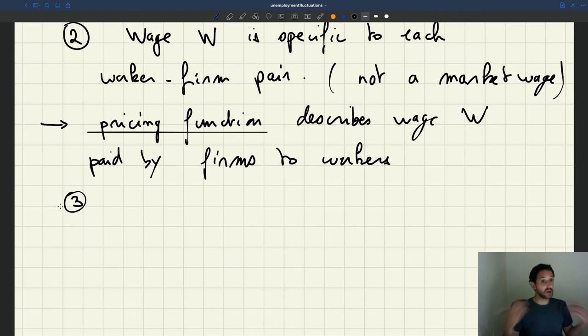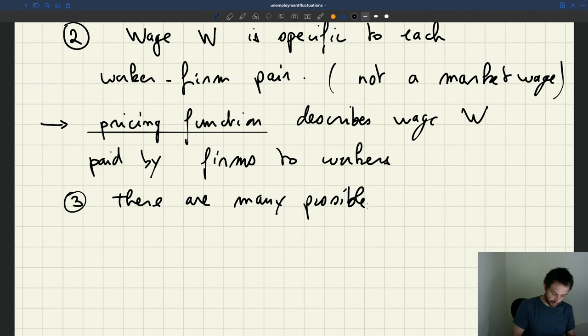The third thing that's very important to realize is that there are many possible pricing functions. So in the same way that there are many possible production functions, there are many possible matching functions, there are many possible pricing functions.